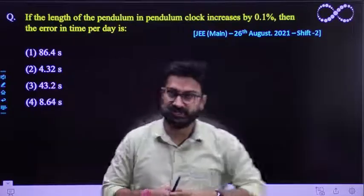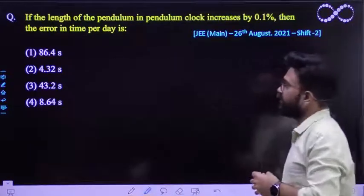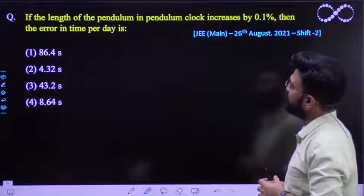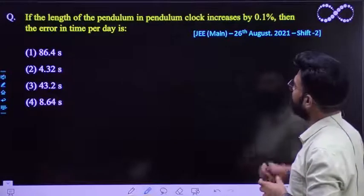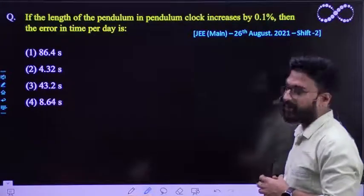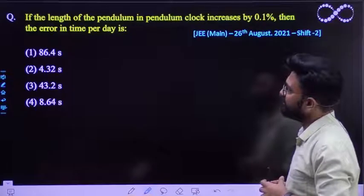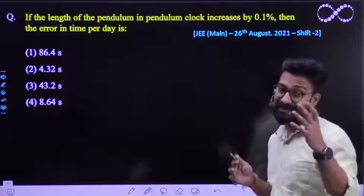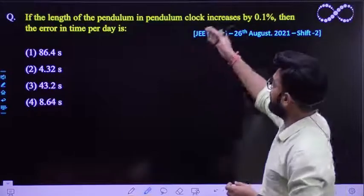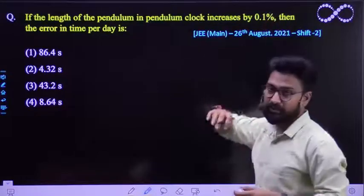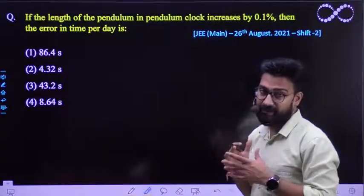So second shift question. Let's see what the question says. It says if a length of a pendulum in pendulum clock increases by 0.1 percent, then the error in the time per day is. So you need to find the error if length increases by what percentage, 0.1 percentage of the pendulum.